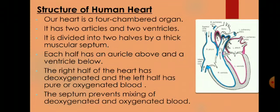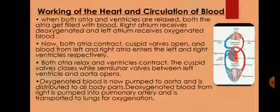Each half has an auricle above and a ventricle below. The right half of the heart has deoxygenated blood and the left half has pure or oxygenated blood. The septum prevents the mixing of deoxygenated and oxygenated blood. Now we will be discussing about the working and circulation of the blood.